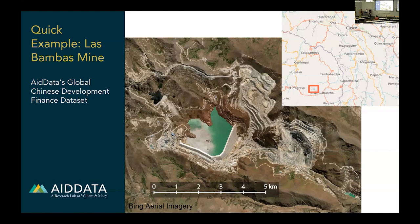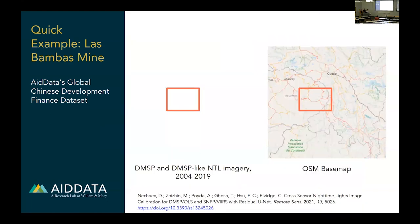We pulled up the Las Bambas mine example and wanted to visualize its development over time using open data. On the right you have the OpenStreetMap basemap, and the red rectangle marks the area of the Las Bambas mine project, just south of Cusco. On the left, you'll see an animation of nighttime light emissions starting in 2004 — well before construction — when it is very dark. During and after construction, once the mine started operating, very significant light emissions appear comparable to Cusco. Shout out to the Earth Observation Group at Colorado School of Mines for providing that imagery.